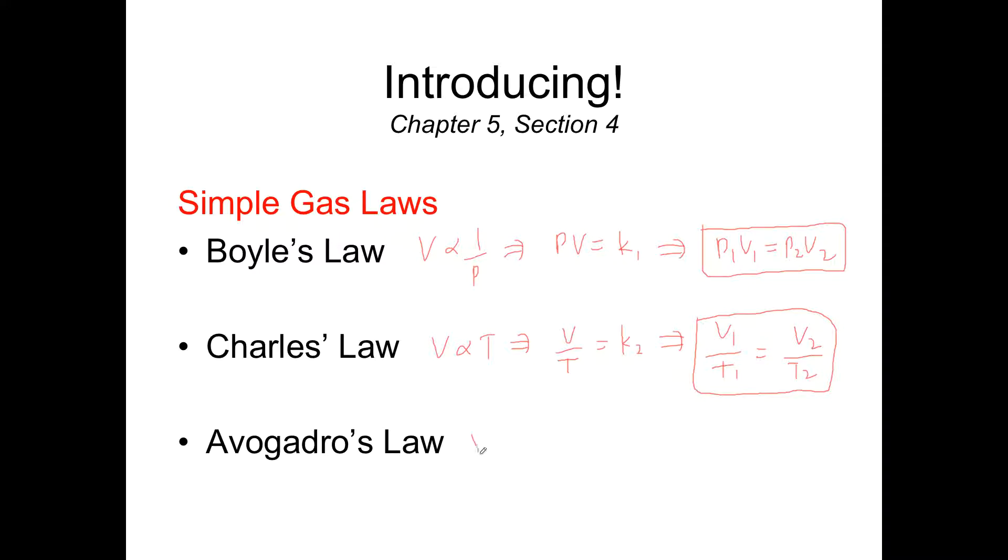And then with Avogadro's Law, we said that volume was directly related to moles. And so we could say N over V is equal to N2 over V2 using similar reasoning to that. Okay, so this was Avogadro's Law. And if you have a situation where nothing changes except the number of moles and the volume, you just want to use this.